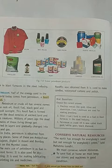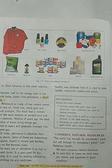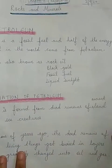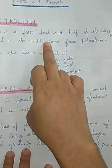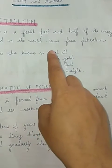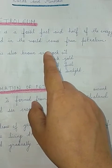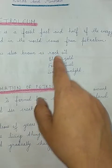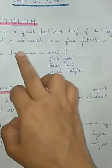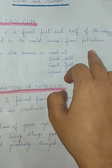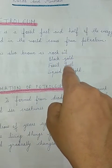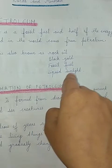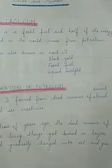Now we will study about petroleum. What is petroleum? You can read from page number 62. Petroleum is a fossil fuel. Fossil fuels are basically obtained from ancient plants and animals. Half of the energy used in the world comes from petroleum. Petroleum is also known as rock oil, black gold, fossil fuel, and liquid sunlight.